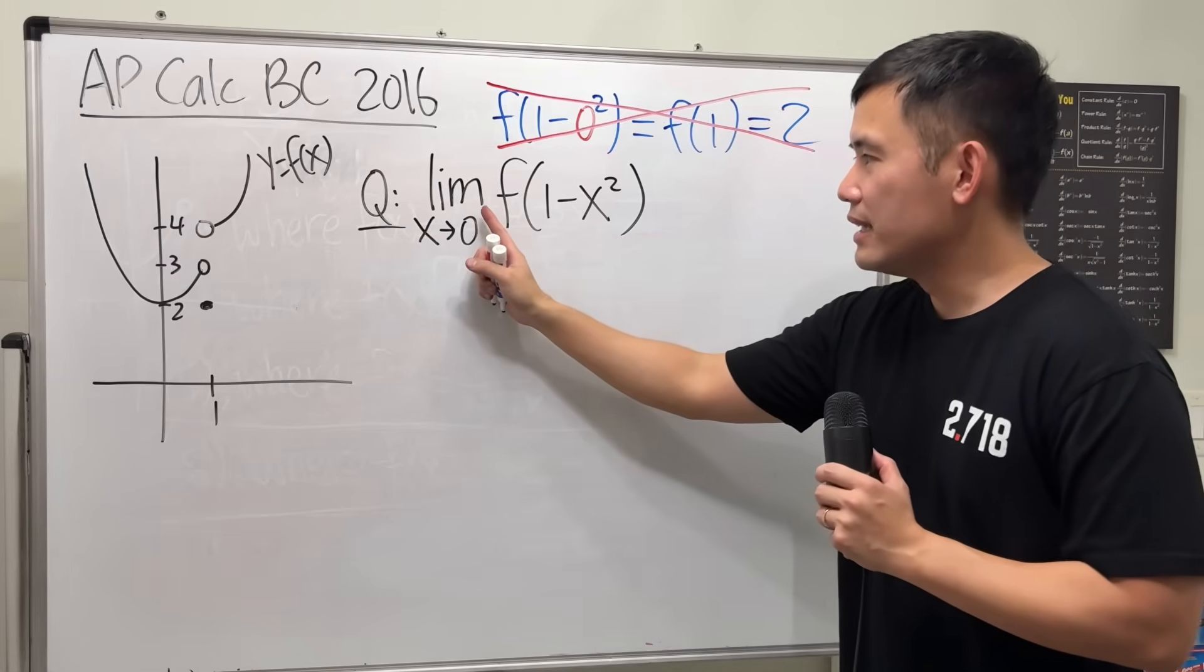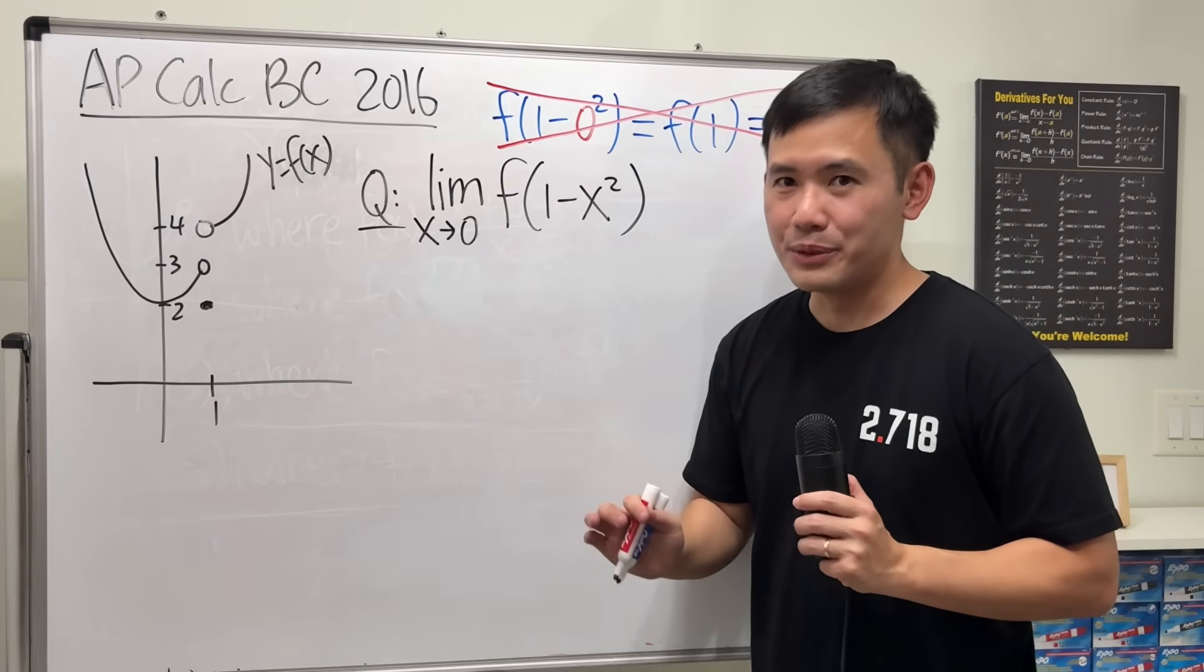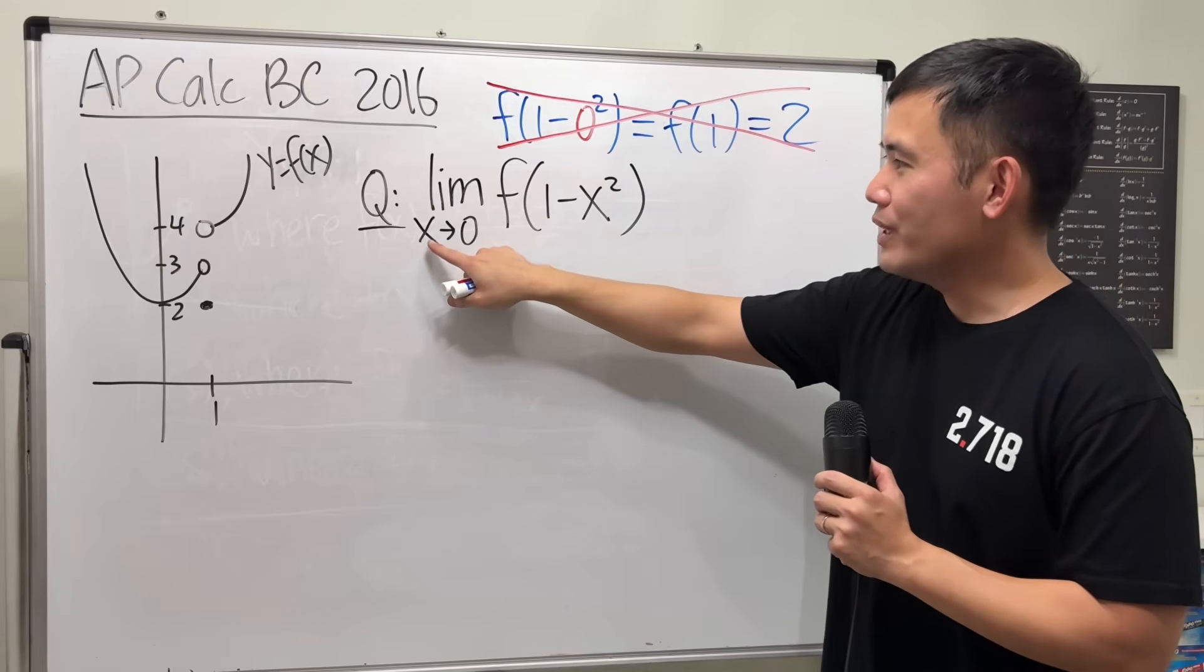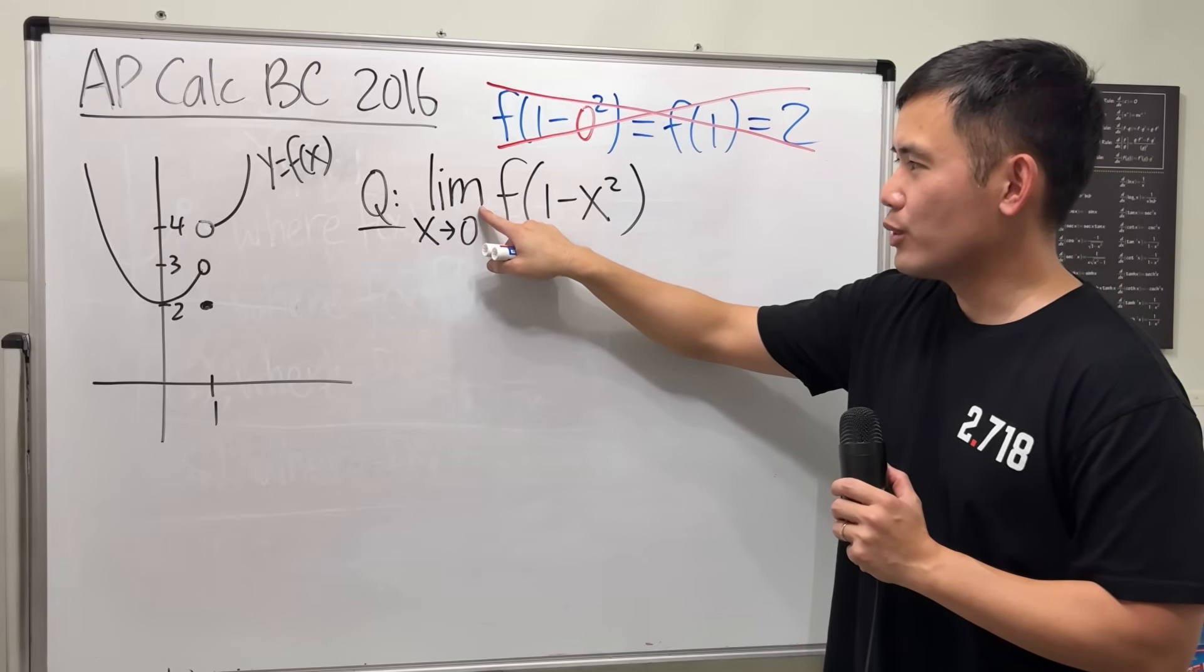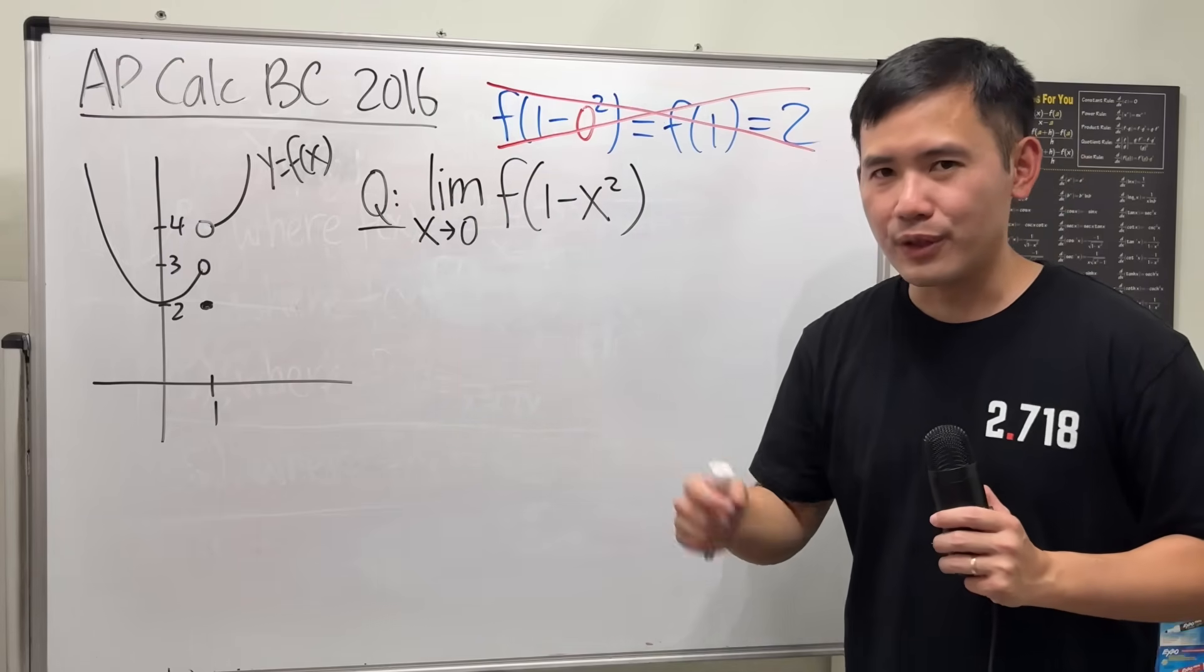Because remember, when we are taking limit, x is not exactly 0. And be really careful with this though. When we have x approaching 0, there's no plus or minus here. What do we have to do? We have to do both directions.